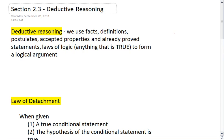Deductive reasoning is when we use facts, definitions, postulates, accepted properties, already proved statements, laws of logic, anything that we already know to be true to form a logical argument. So we have this list of things that we already know to be true statements.